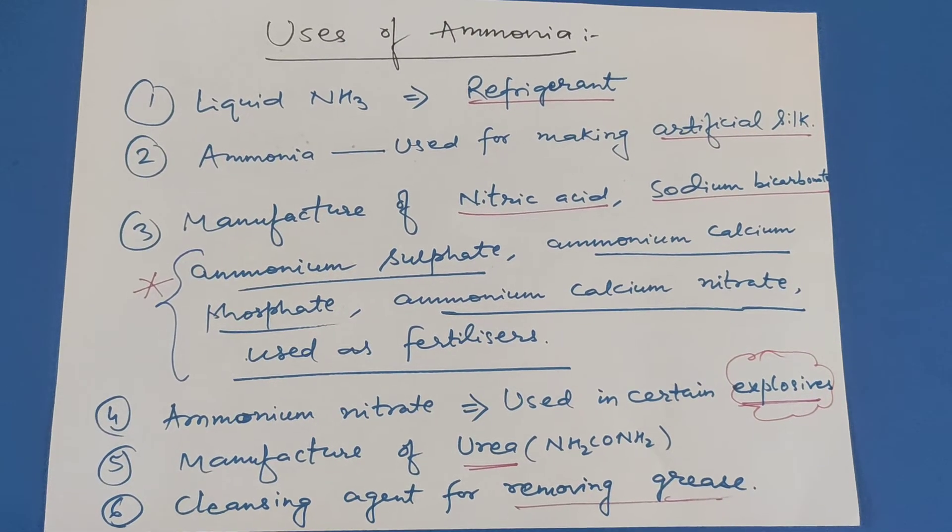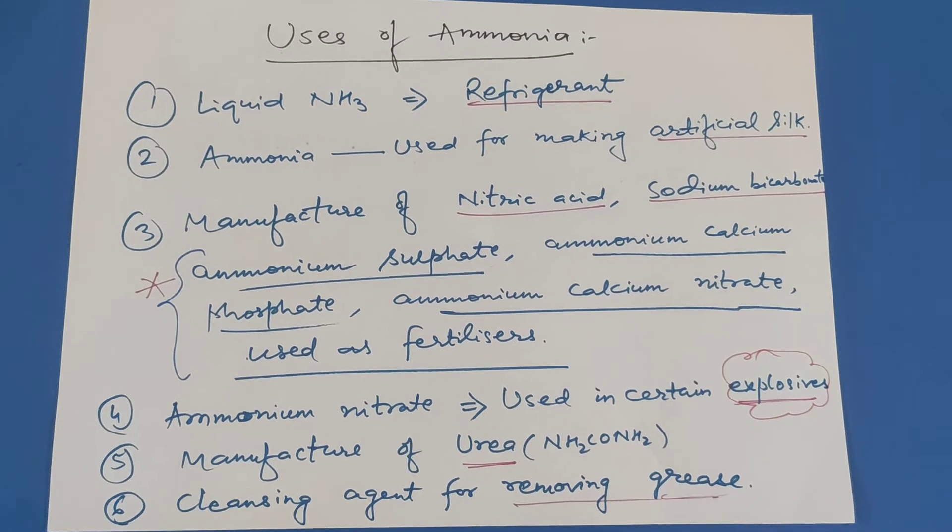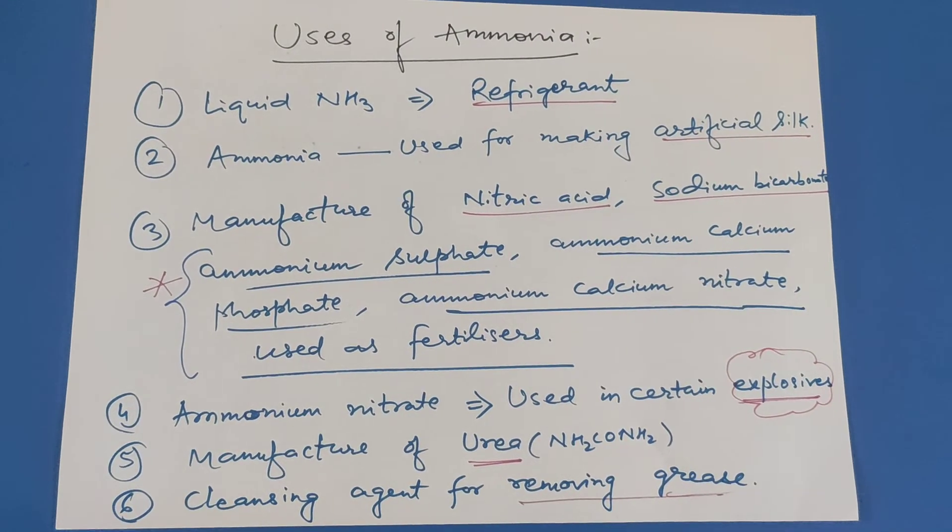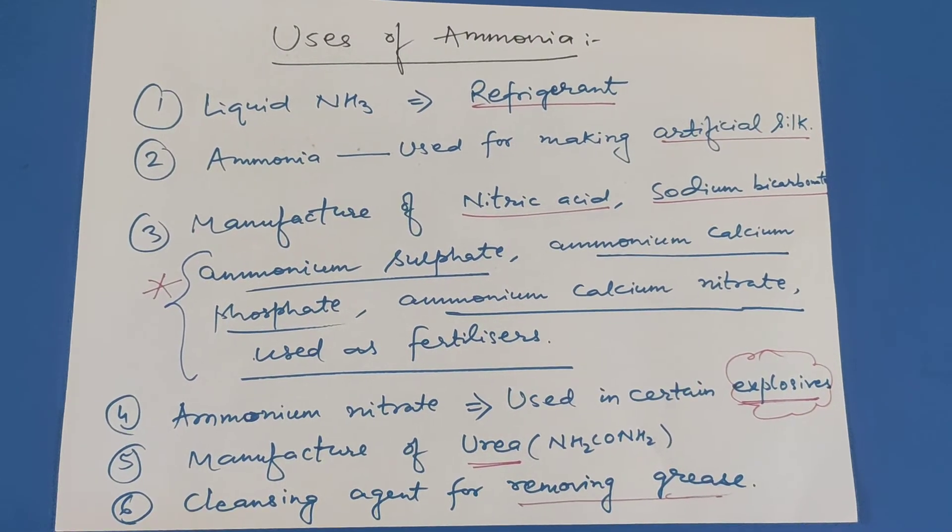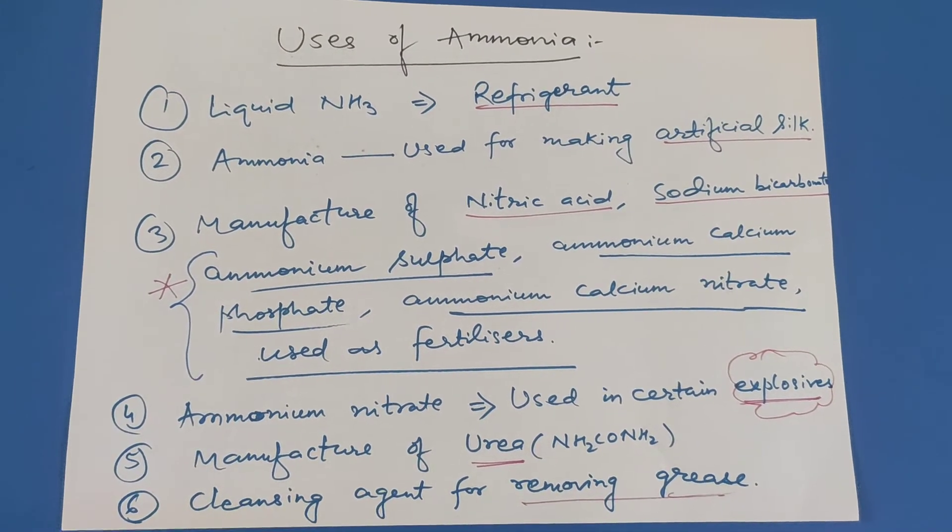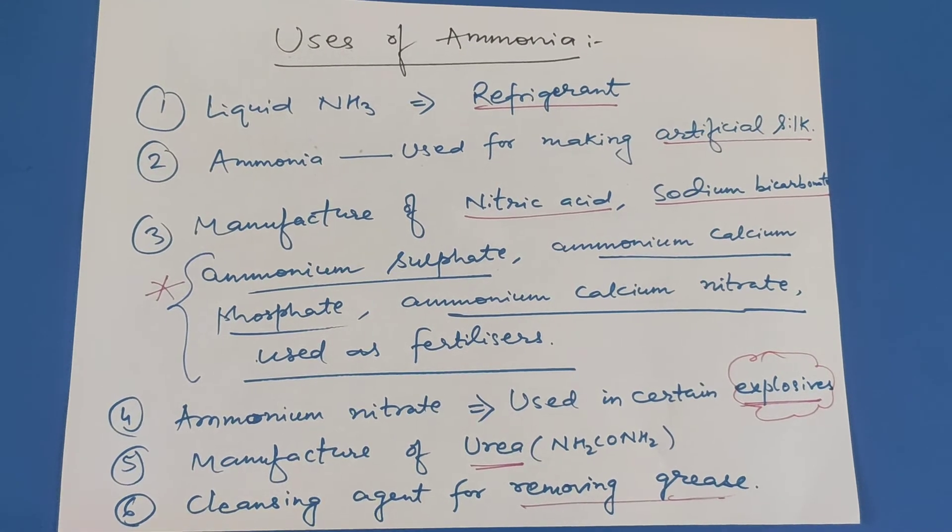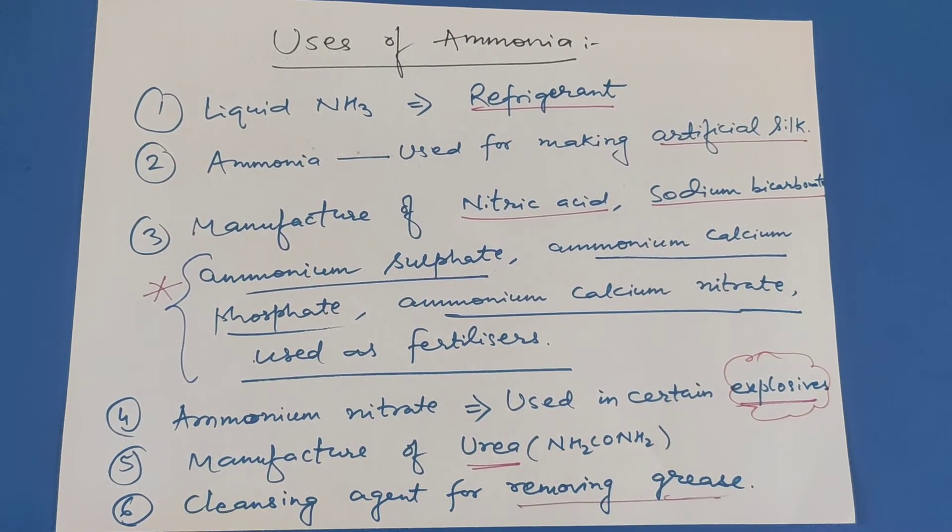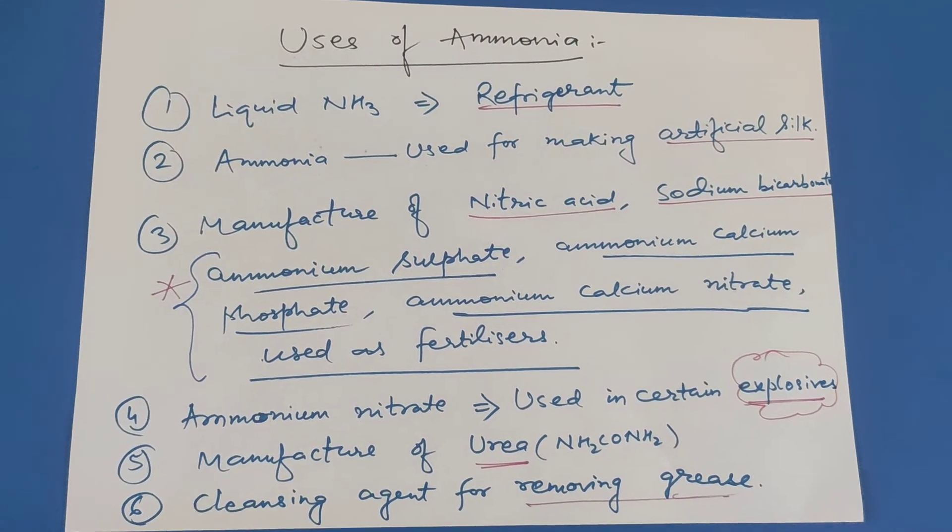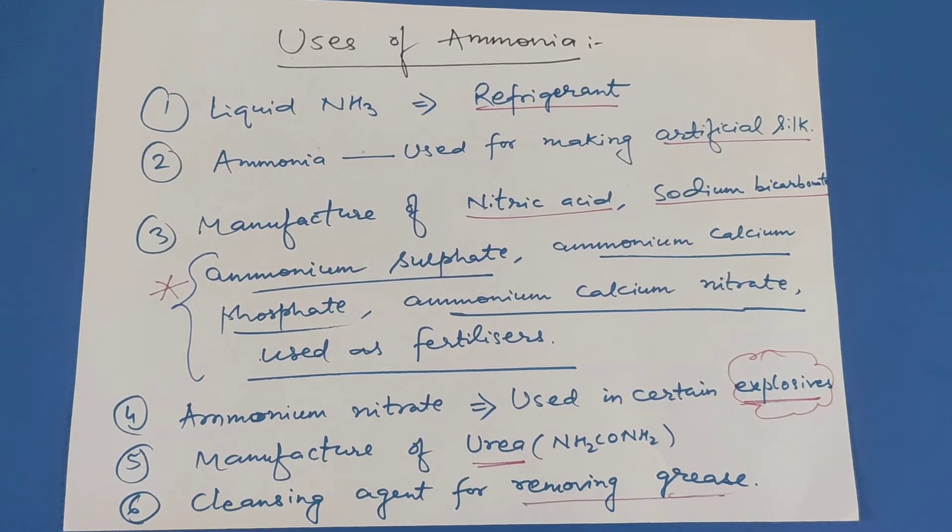Let's see the uses of ammonia. Liquid ammonia is used as a refrigerant. Ammonia is used for making artificial silk. Ammonia is also used for the manufacture of nitric acid by Ostwald process and sodium bicarbonate by Solvay process.